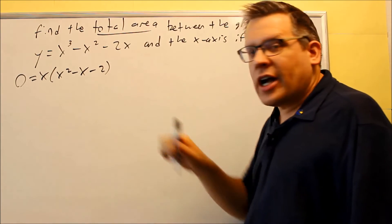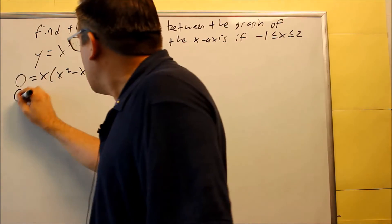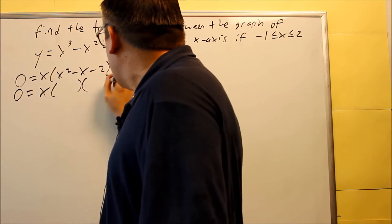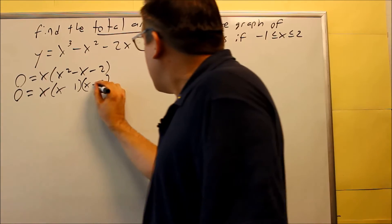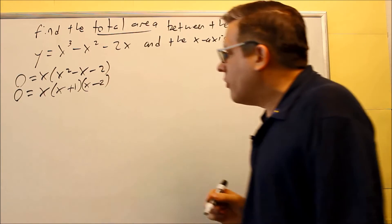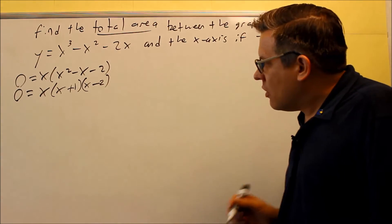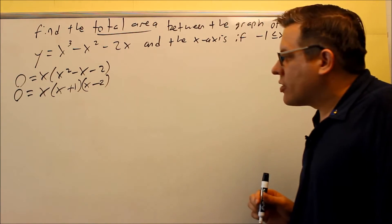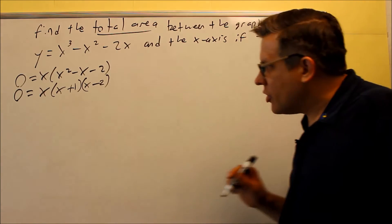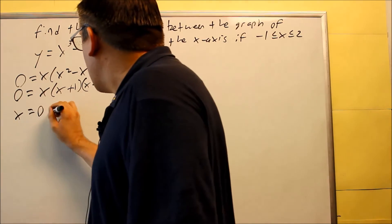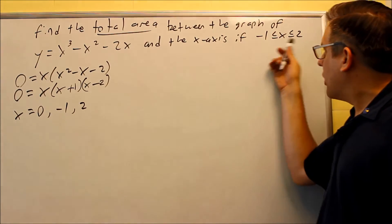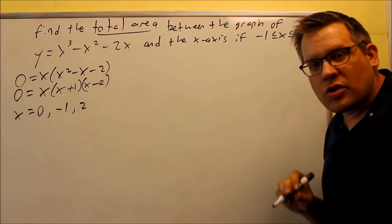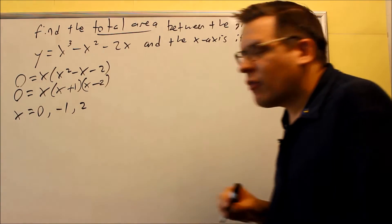And then this one inside can be factored one more time. You get one and two for each of those, and you're going to get a minus and a plus here to get the negative there as a result. So you're going to set each one of those equal to zero. You're going to get x is equal to zero, negative one and two. Now of course you'll get negative one and two because that's the original endpoints of the interval. But we also have a zero on this one.